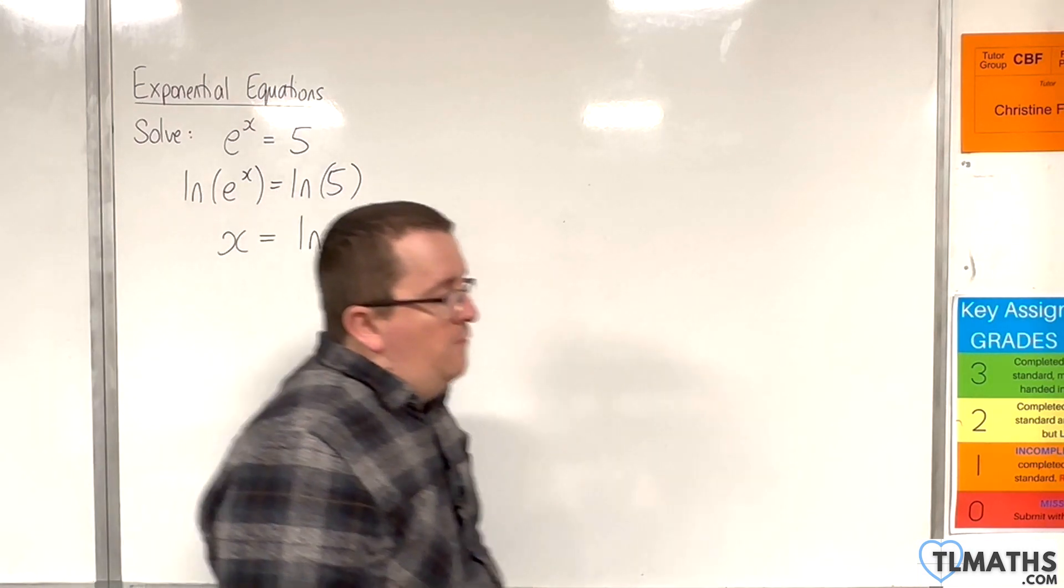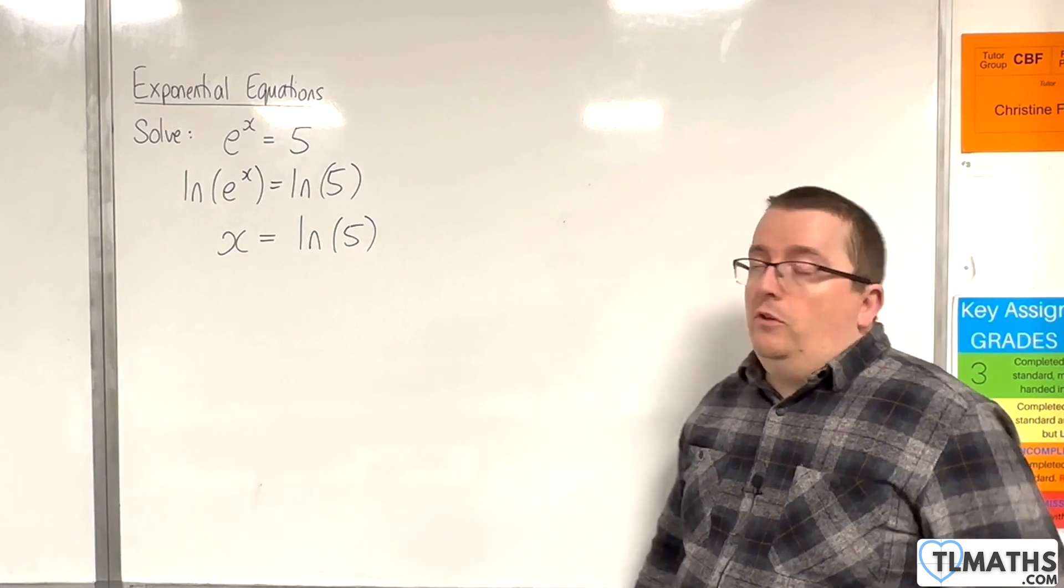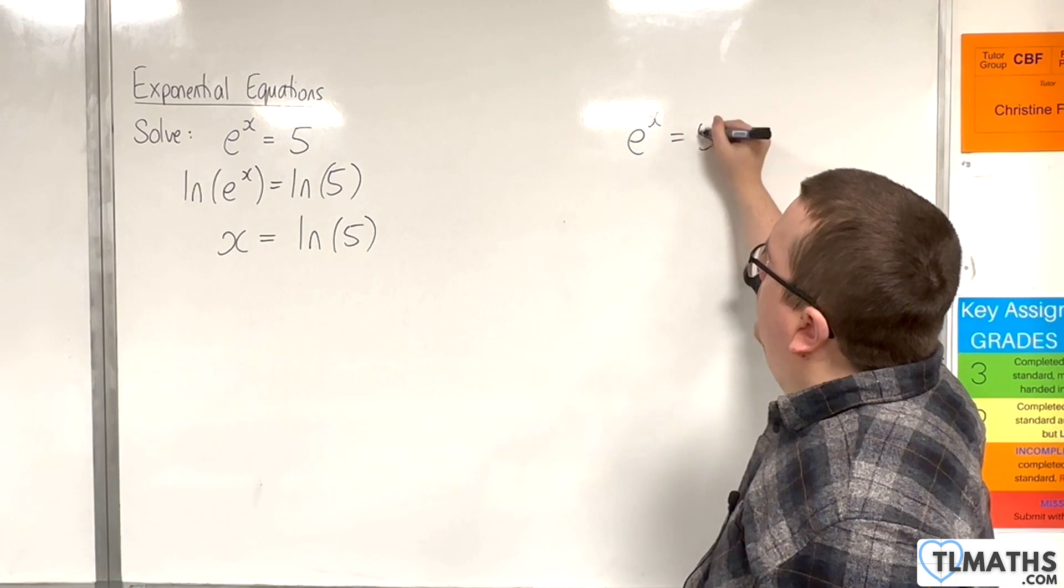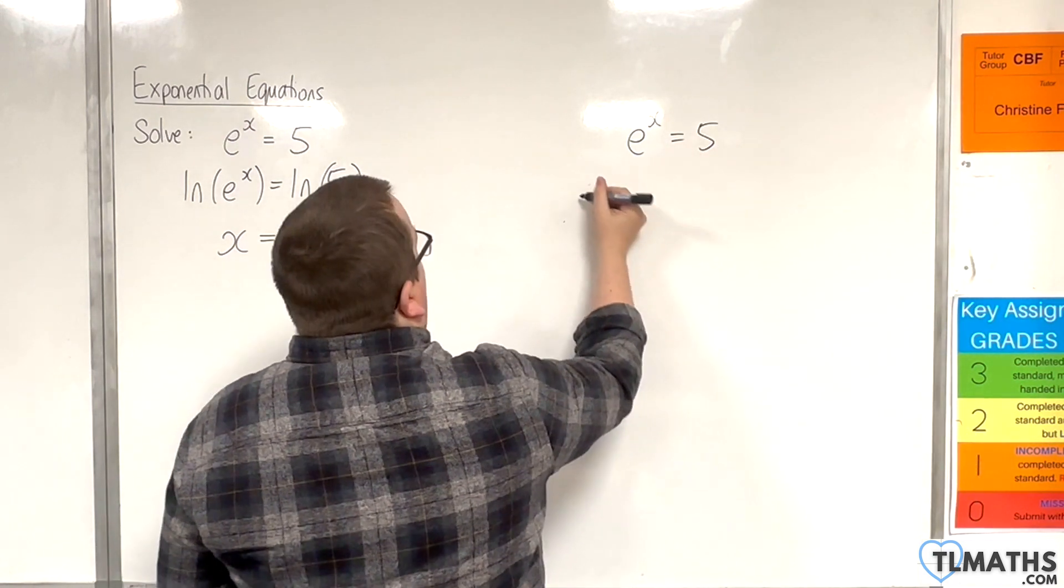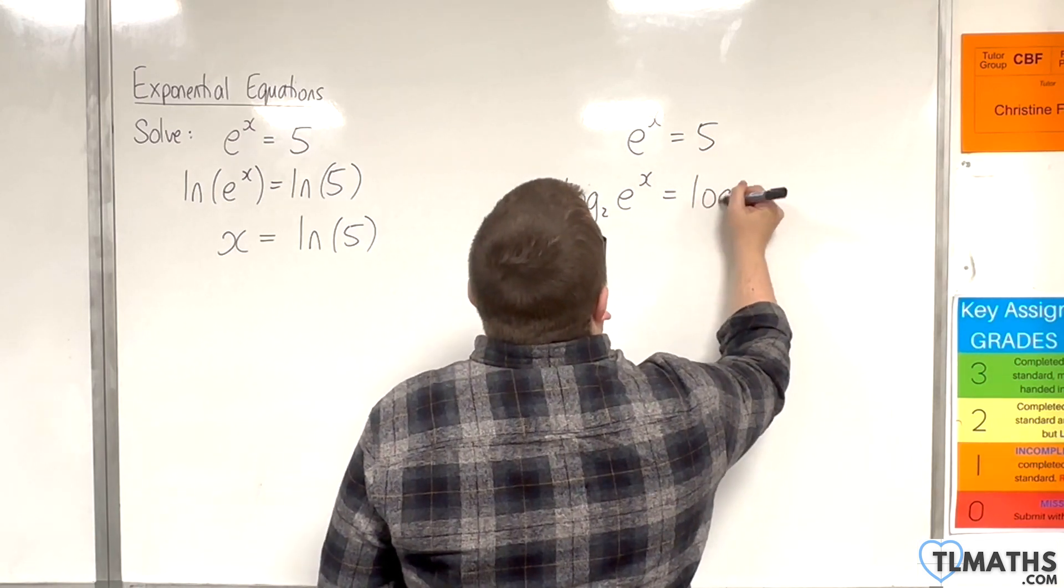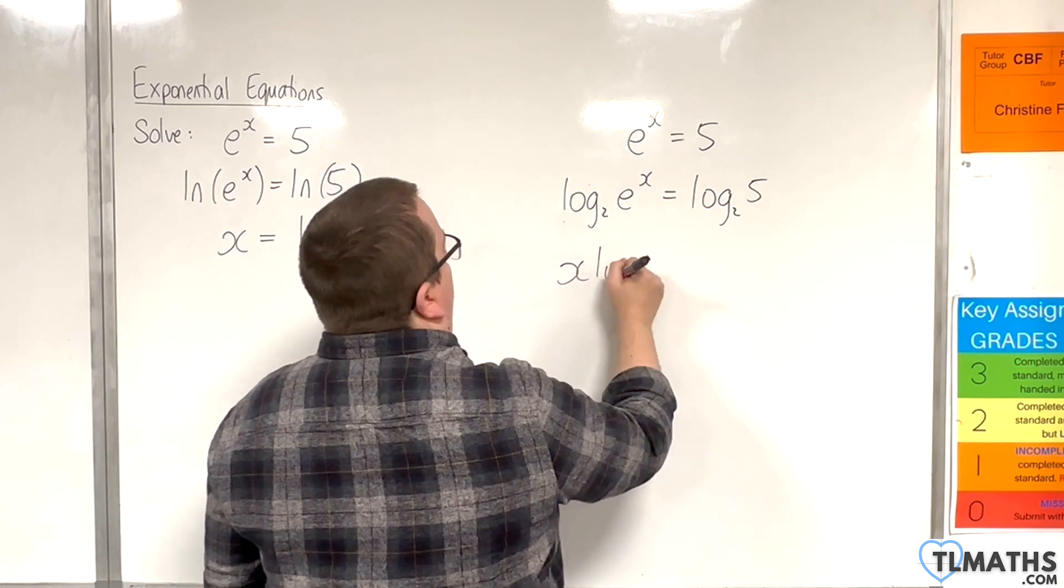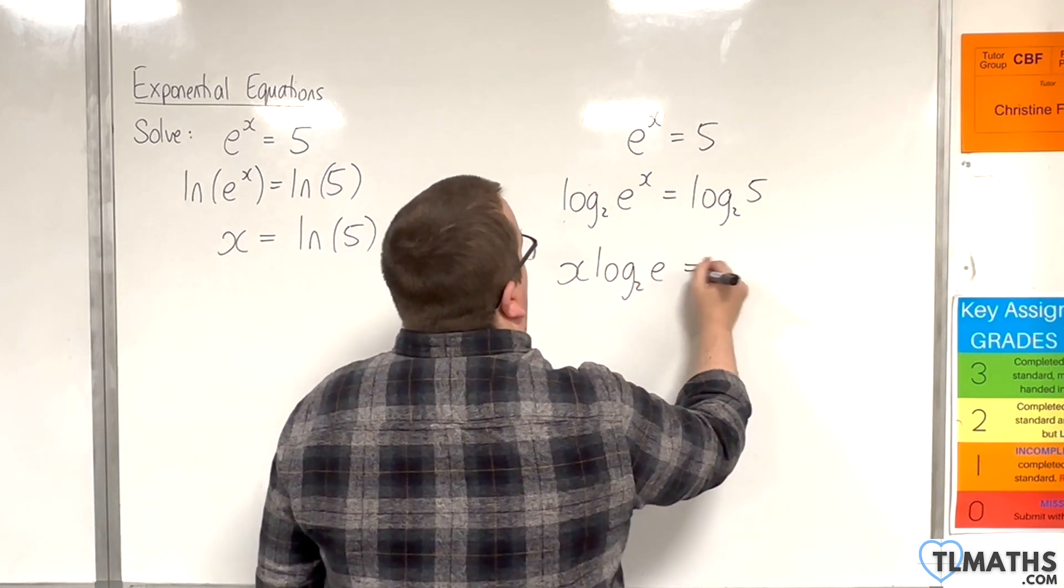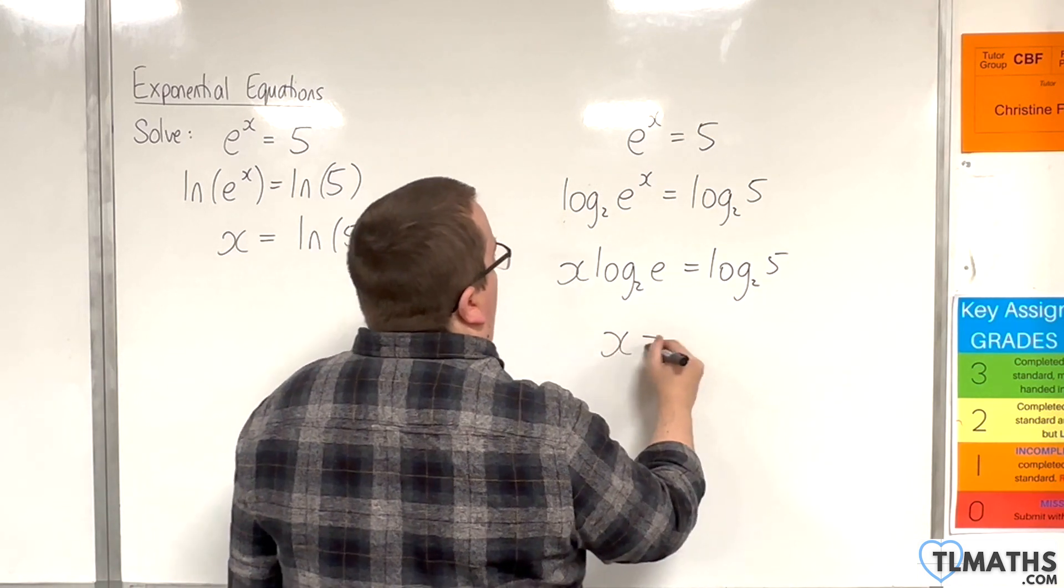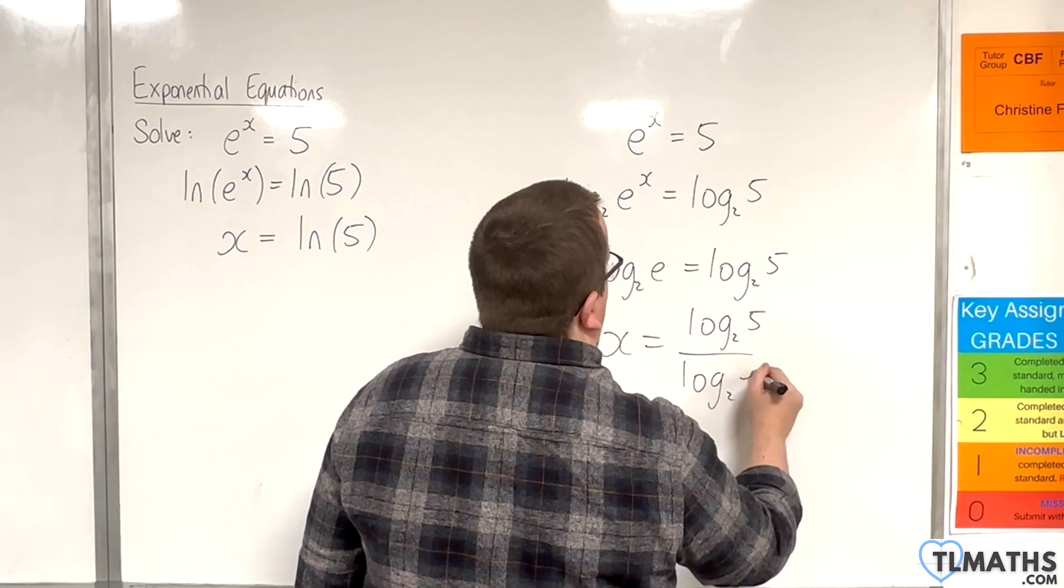Now you could, theoretically, solve this equation using any base you like. You could solve it by taking log base 2 of both sides if you wanted to. Bring the x down to the front. And so then x is log base 2 of 5 over log base 2 of e.